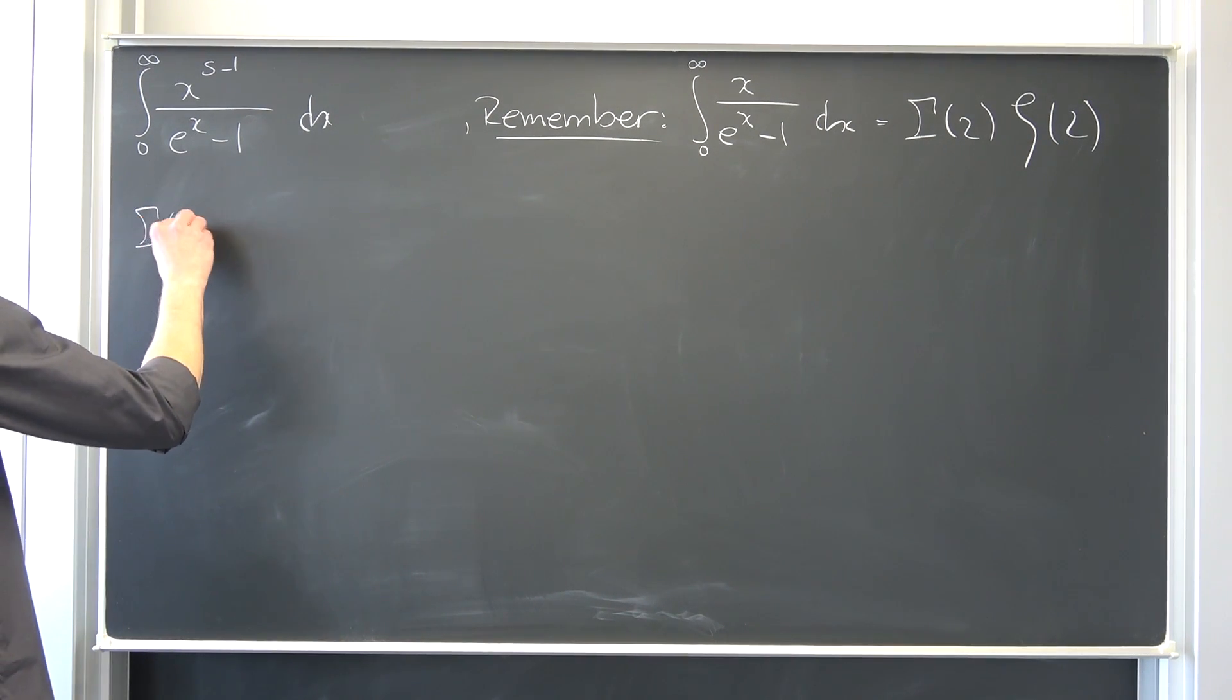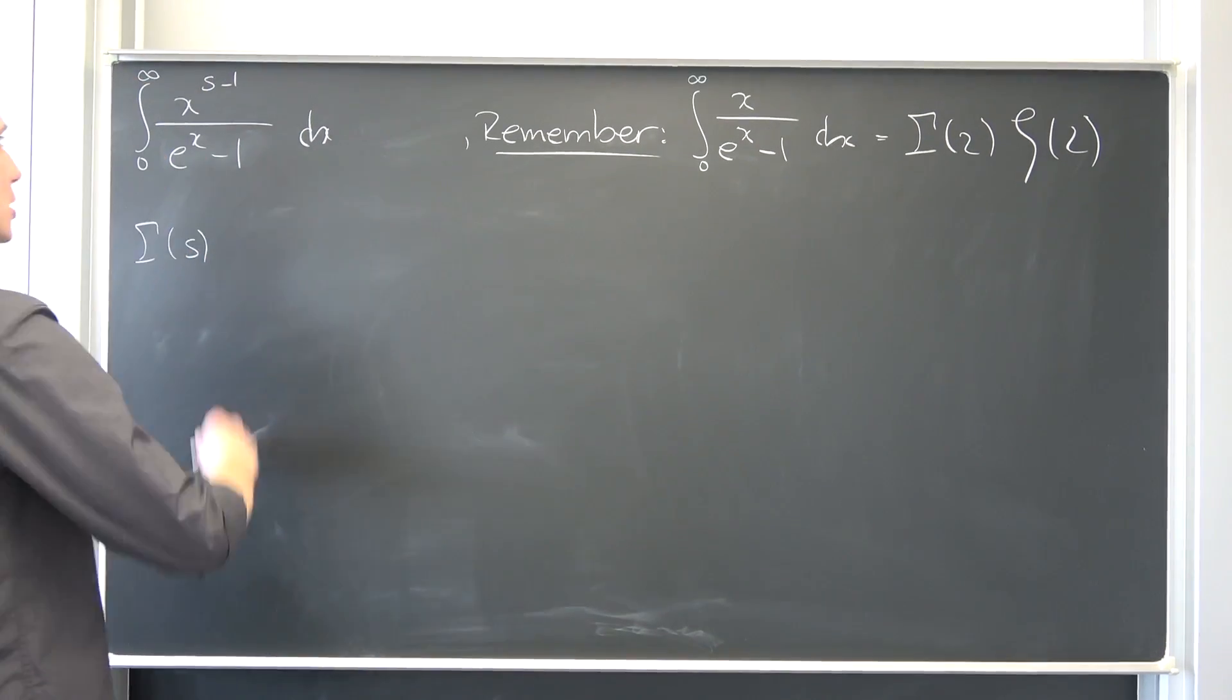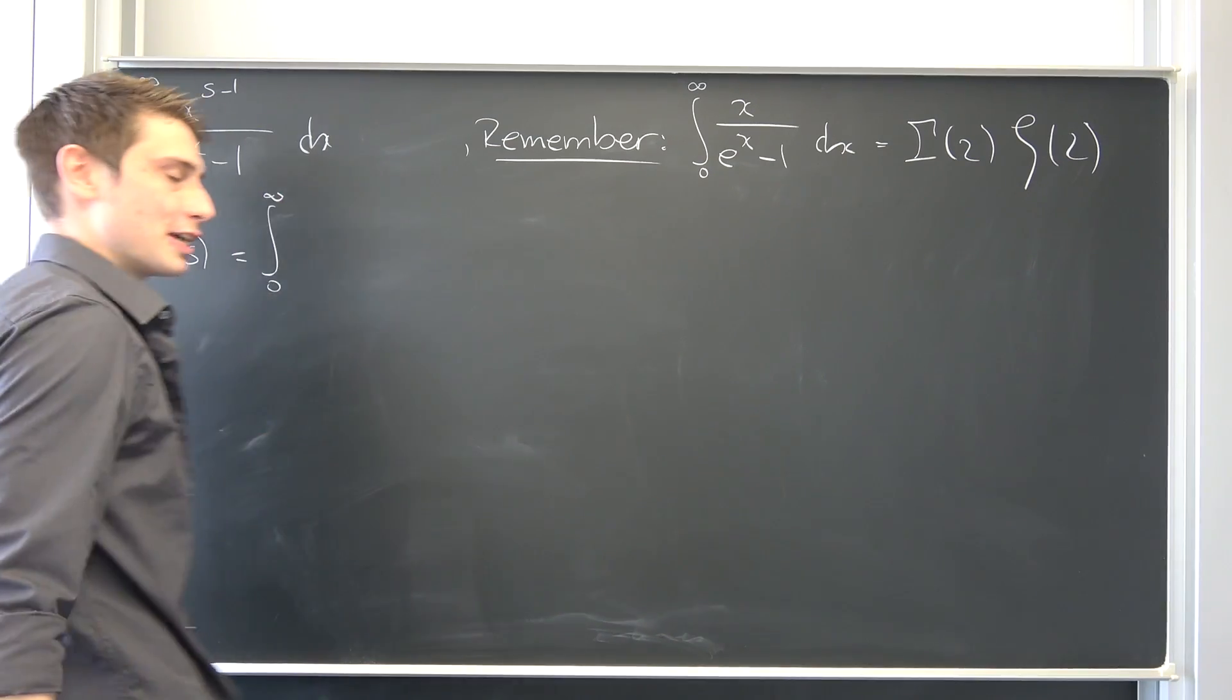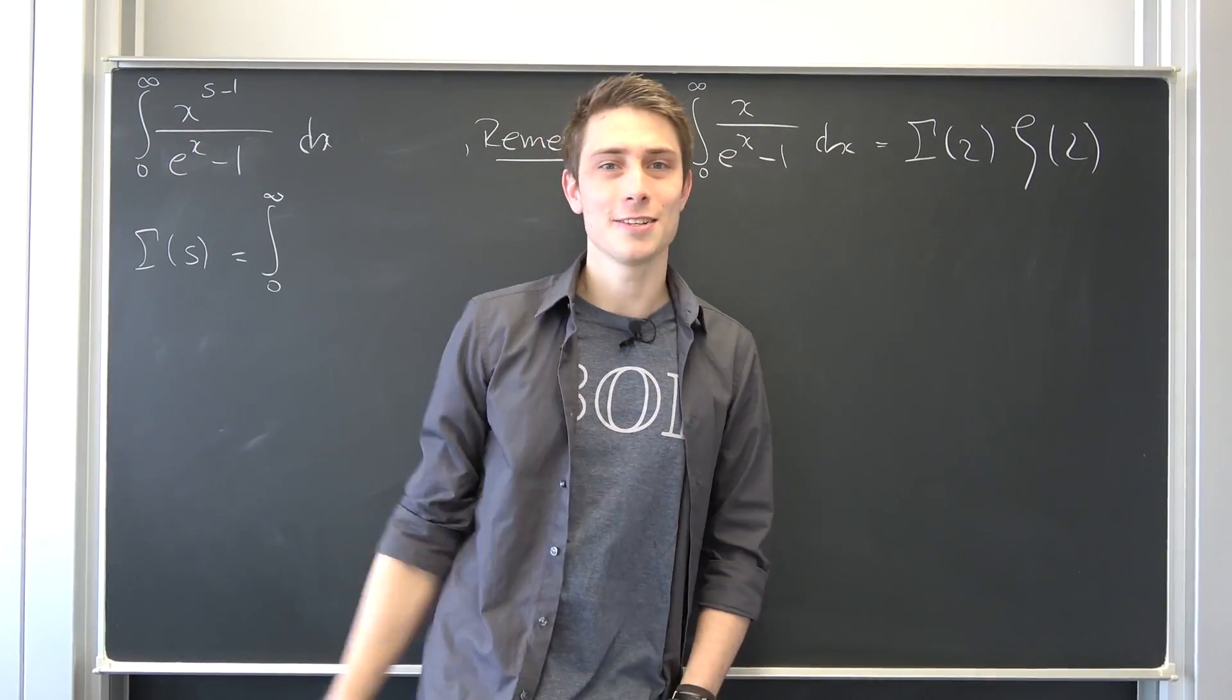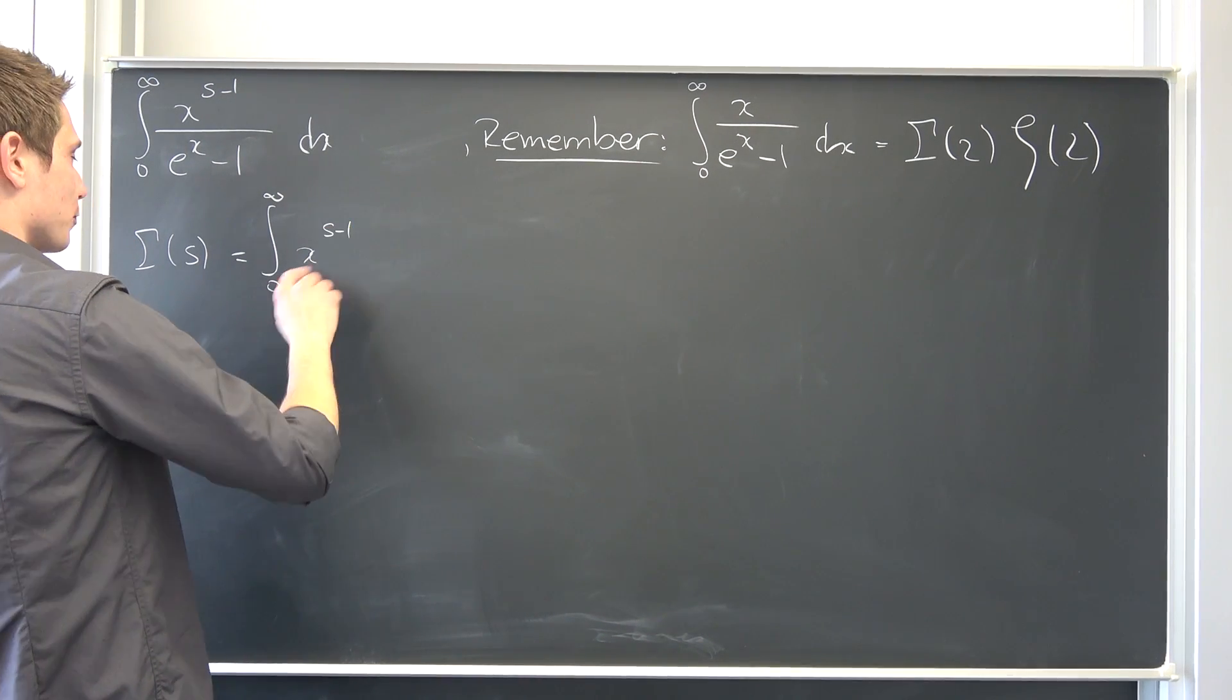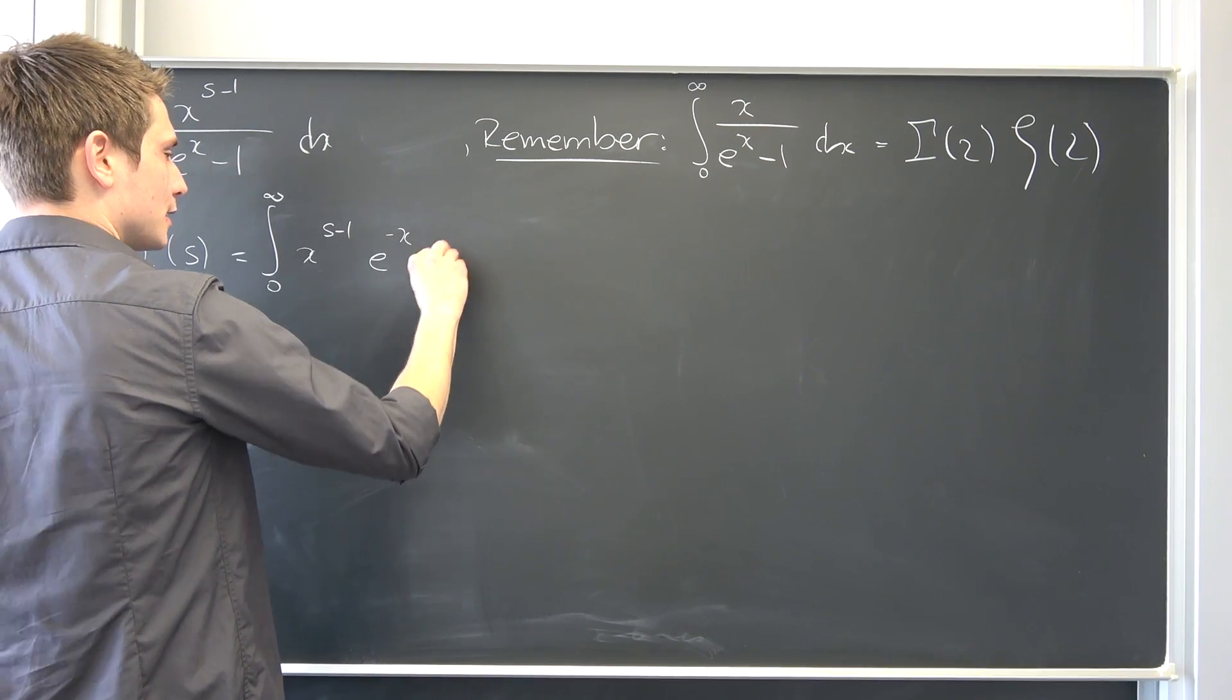So we're going to start off with gamma function of s. Let's put gamma of s just because of this s right here. And we have defined it, no, we have not defined it. We have derived it using Feynman integration and Laplace transforms as nothing but x to the s minus one power times e to the negative x dx.